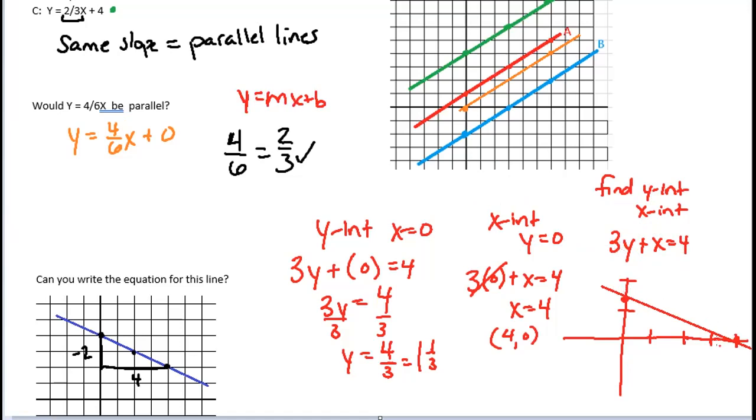The y-intercept is when x equals zero, and the x-intercept is when y equals zero. When you have an equation of a line, it doesn't matter what format it's in — y equals mx plus b or any other format. You can plug in any number for y and any number for x to find the other coordinate and plot that point. Any two points on the line connected together make the line.